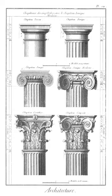Bahut: a small parapet or attic wall bearing the weight of the roof of a cathedral or church. Balconet: a false balcony, or railing at the outer plane of a window.